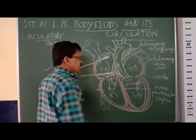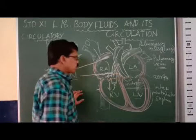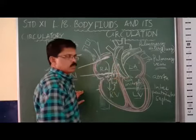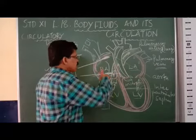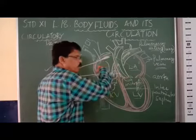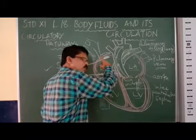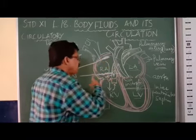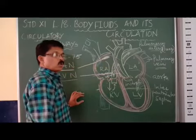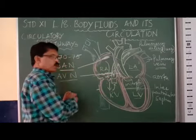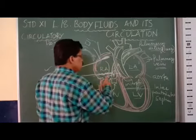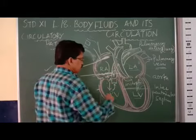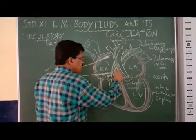How this action potential or electric potential is transferred to the heart nodes is very important. The action potential developed from the SA Node will be transmitted to the AV Node — the atrio-ventricular node — and that action potential or electric potential will be passed on to bundles.